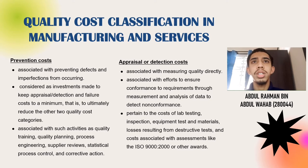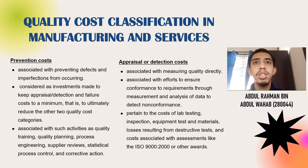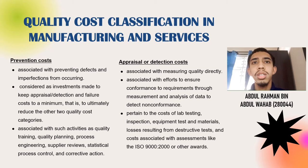We will continue with quality cost classification in manufacturing and services, broken down into four different components. The first is prevention costs — associated with preventing defects and imperfections from occurring. Considered as investments made to keep appraisal, audit, and failure costs to a minimum, they are associated with activities such as quality training, quality planning, process engineering, supplier reviews, statistical process control, and corrective action.